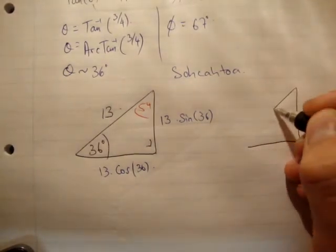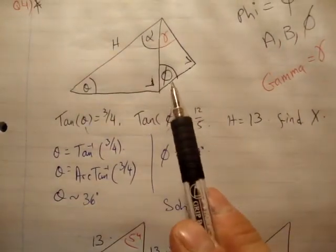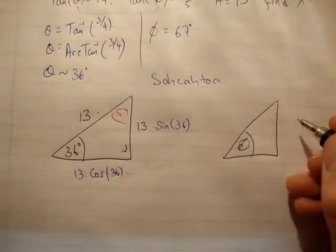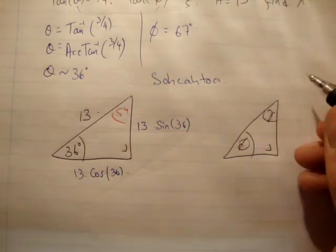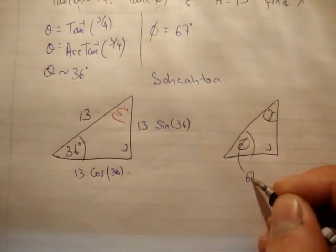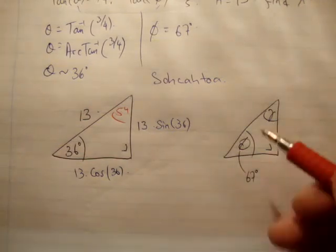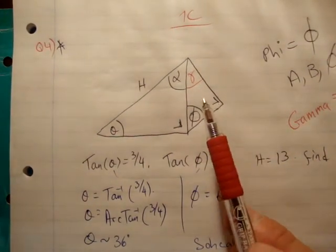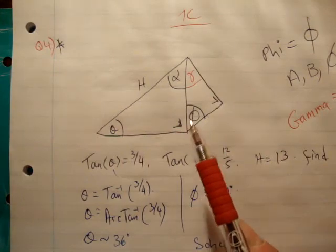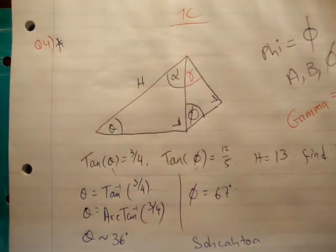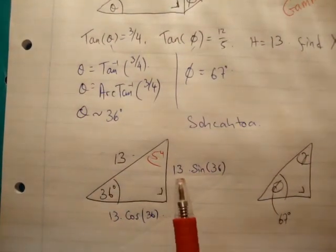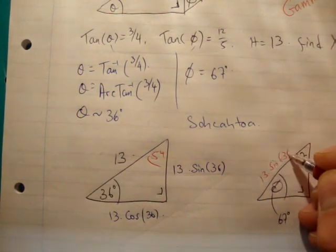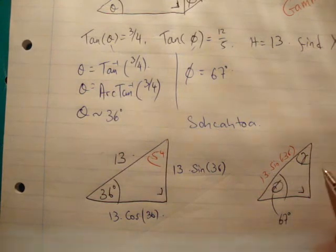We could do the exact same thing with our remaining triangle, the one up here. Okay, so what are we going to do? We're going to say that we have phi, we have a right angle, we have gamma. We know that phi is equal to 67 degrees. And we know what? We know this. If you look at this now, the hypotenuse of this triangle is equal to the opposite of this triangle. But we know the opposite of the first triangle because we got it. It's here. So this one is 13 times the sine of 36.